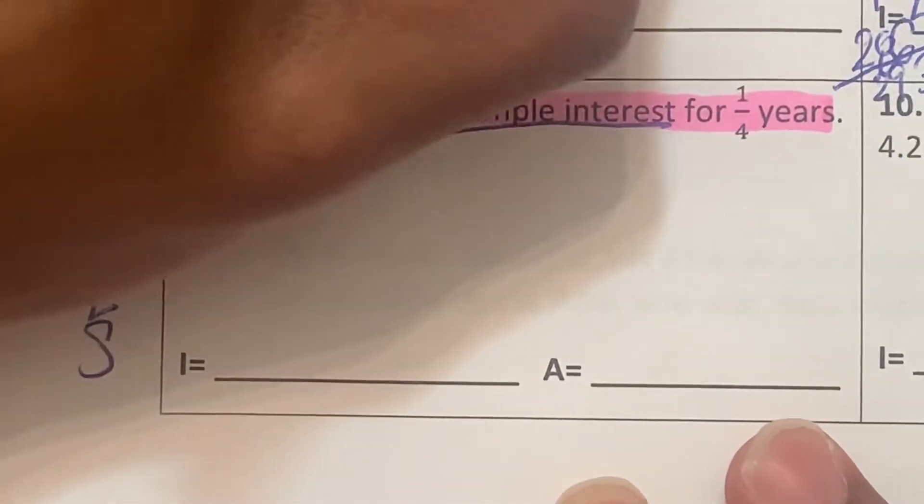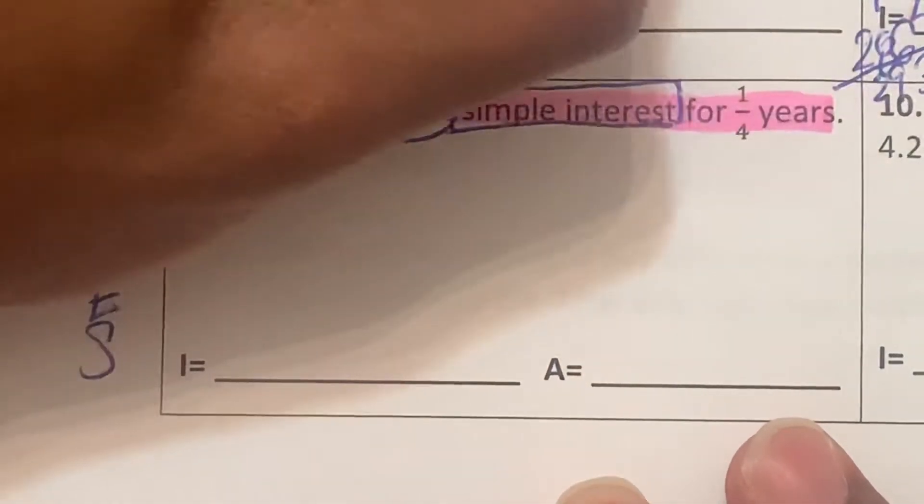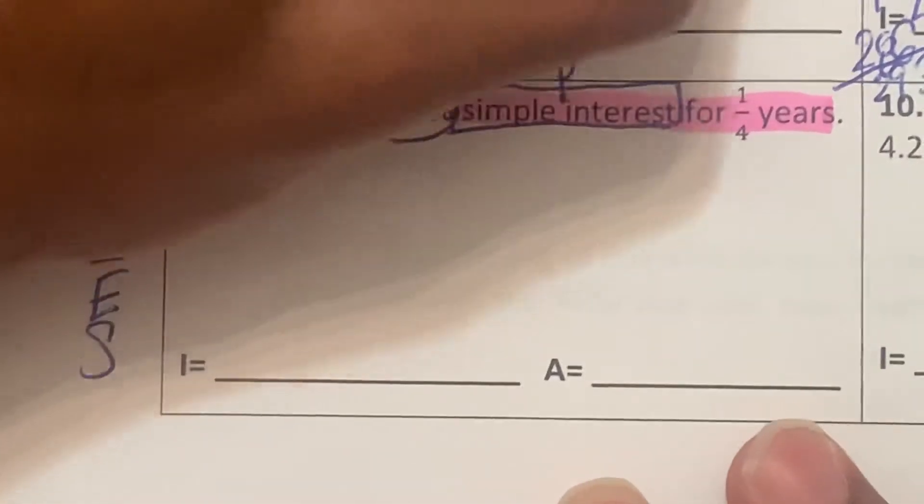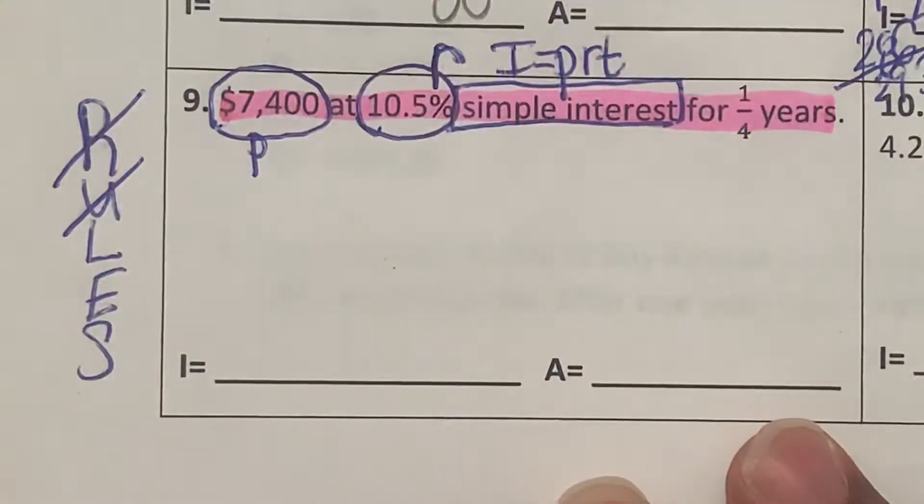It's going to be simple interest. So the formula for simple interest is I equals PRT. And the time, this is going to be the time.